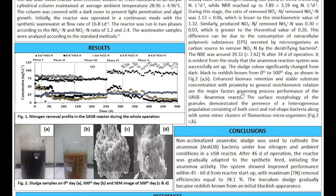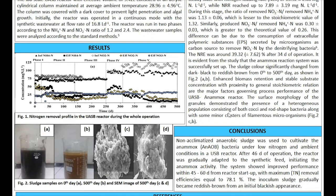The performance of the anammox system for nitrogen removal is presented in Figure 1. Figure 1 shows 5 different phases of the nitrogen removal profile. According to the ammonium to nitrite ratio, the reactor was run in 2 phases with ammonium-nitrite concentration ratios of 1.2 and 2.4.